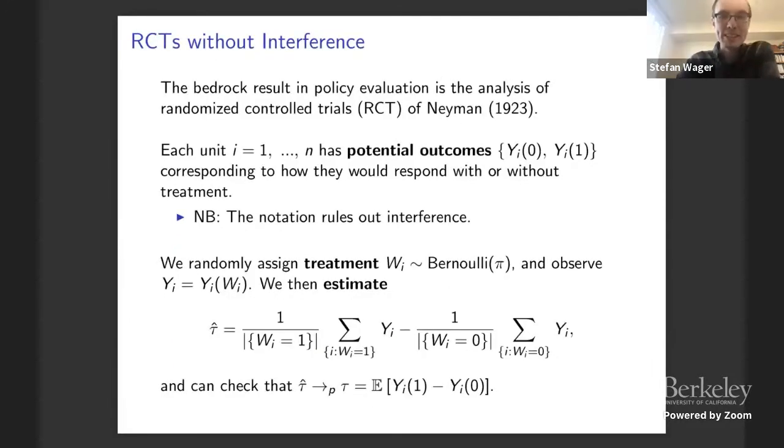Before talking about interference, I just wanted to briefly say, what is the simplest thing you can do without interference? And that's the main analysis of the randomized trial. We want to see, does giving you surgery help you survive? We're going to write down two potential outcomes, Y0, Y1, what would have happened to you without surgery or with surgery? And then the main result is that if assignment of surgery was random, then you can take average survival for people who got surgery versus average survival for people who didn't. And that's a consistent estimate of the average treatment effect. This notation rules out interference automatically. When I write down YI0, there's no way that your friend getting surgery could affect you in any way in this implementation.